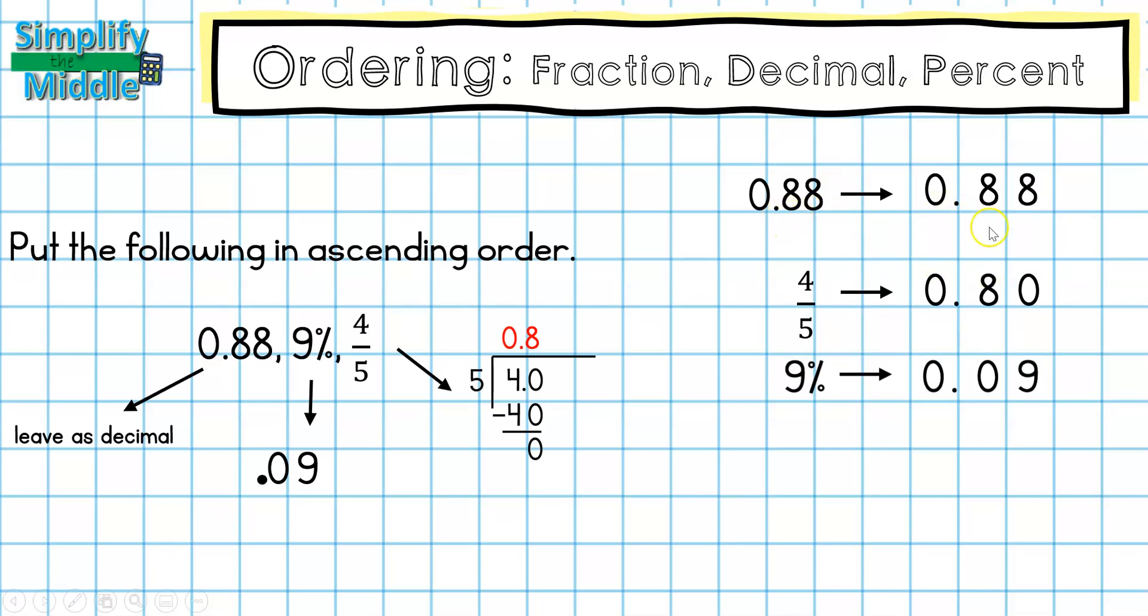Next, I have 88 hundredths, with an eight in the hundredths place value, and eight tenths, which has a zero in the hundredths place value, because it's the same thing as 80 hundredths. So I can see that four fifths, or my 80 hundredths is going to be my next smallest number, and then that leaves my largest number as 88 hundredths.